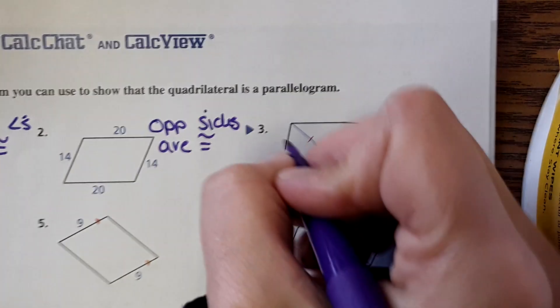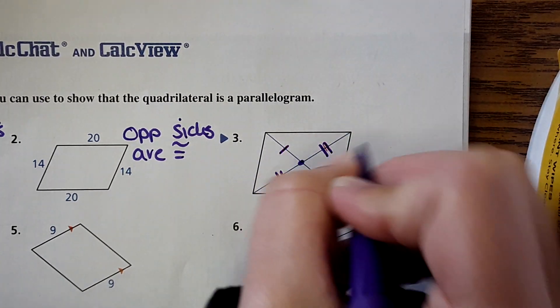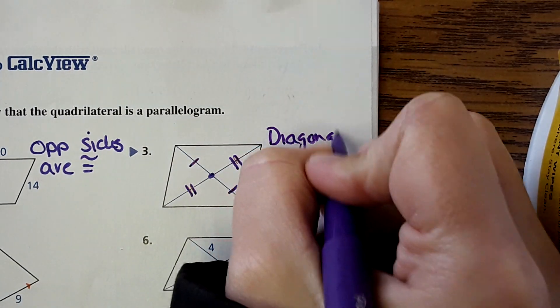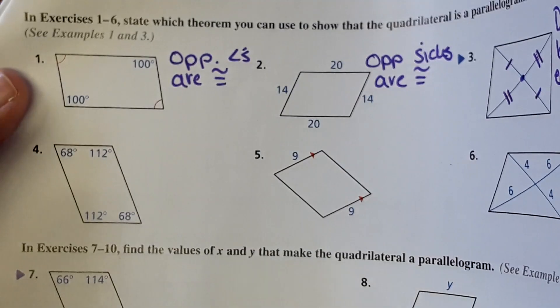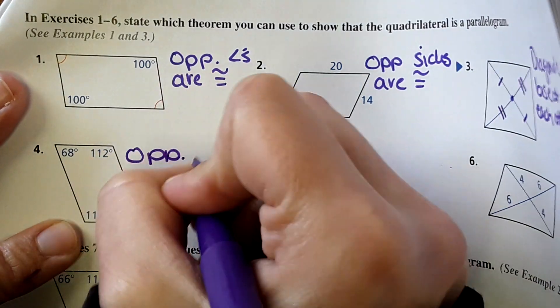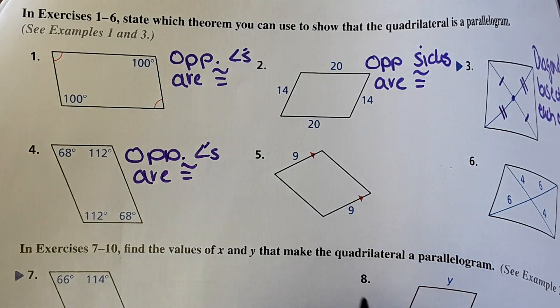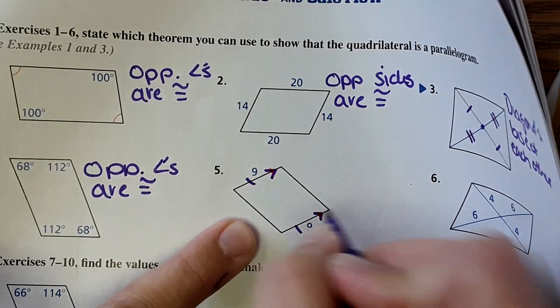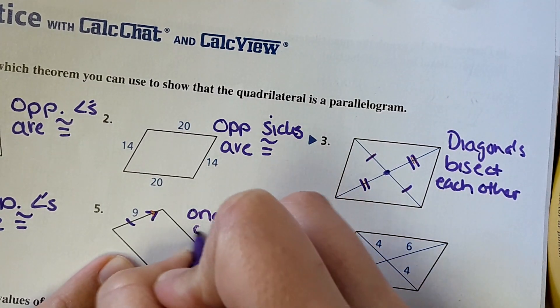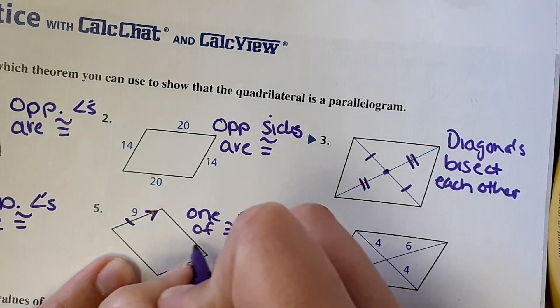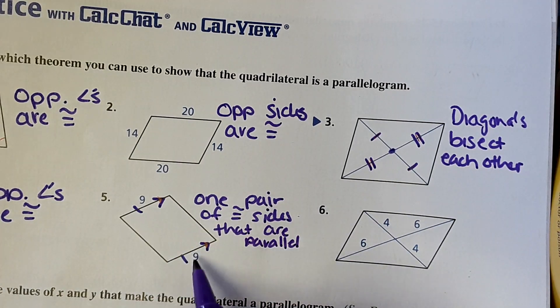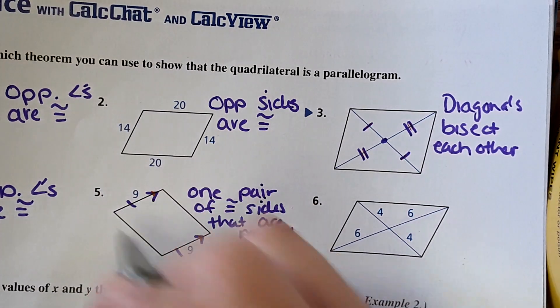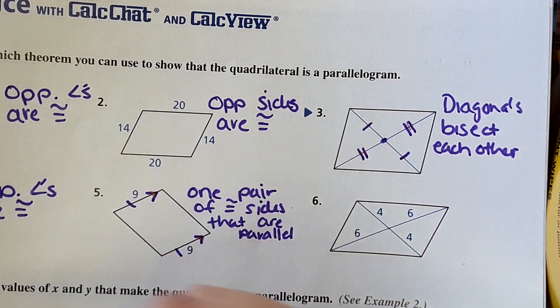Number three shows that this is the midpoint of the diagonal, meaning this segment is the same length as this one and this is the same length as this — diagonals bisect each other. Number four: opposite angles are congruent. Number five is the new one — one pair of congruent sides that are parallel. Once you prove it's a parallelogram with those conditions, it follows all the other rules. Number six: diagonals bisect each other.